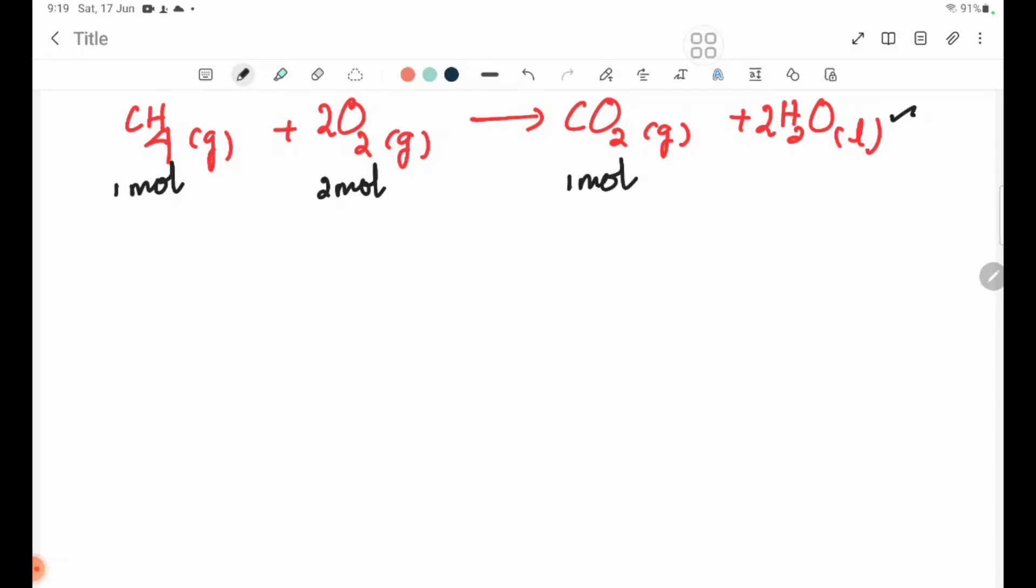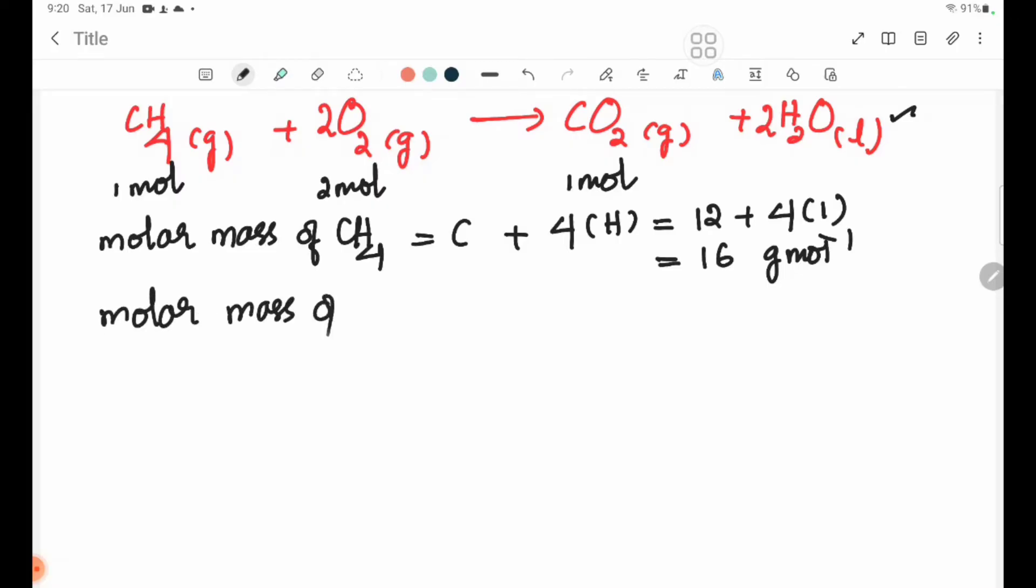The molar mass of CH4 equals C plus 4H, which is 12 plus 4(1), equals 16 grams per mol. The molar mass of O2 equals 2O, which is 2(16) equals 32 grams per mol.